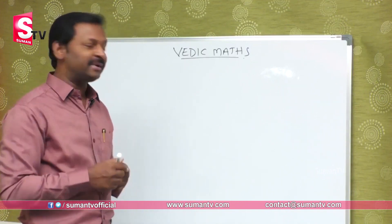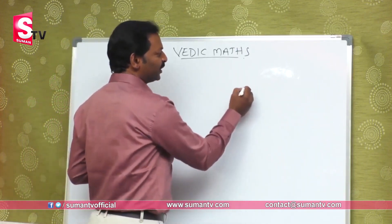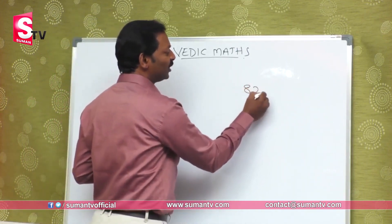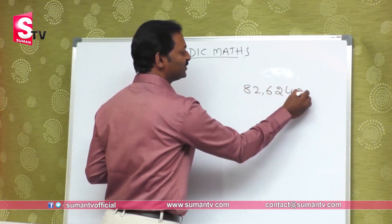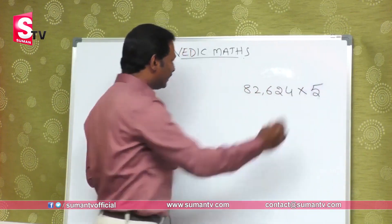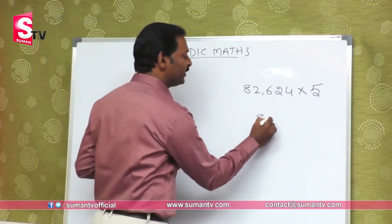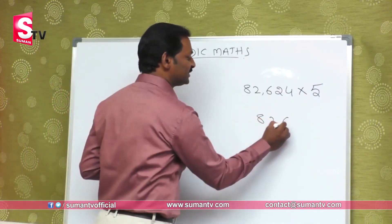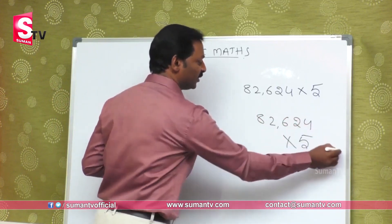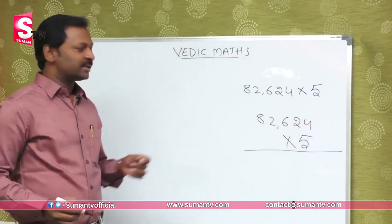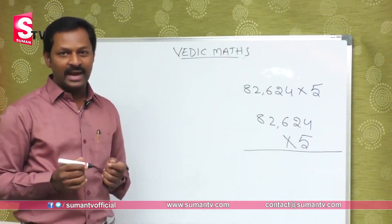We have a different method. Suppose you have 82,624 multiplied by 5. We will multiply these together. What do you do? 82,624 is multiplied by 5. What is happening here? We have the multiplication table in the multiplication table.